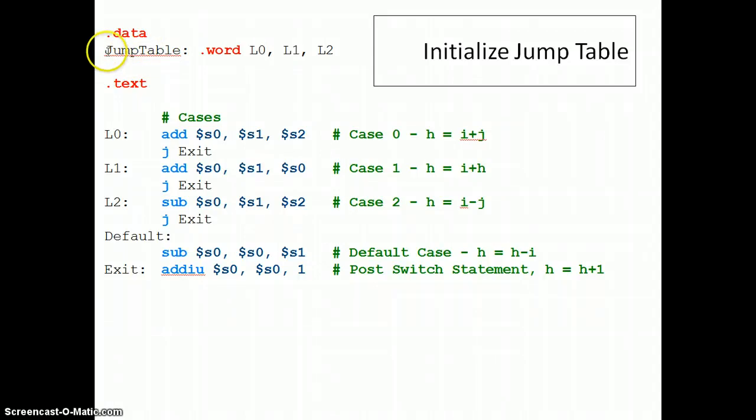The jump table, I just give it a label. So this could be anything, any English word, colon, .word. This is saying I want whatever this variable is called to be an array of words and I want to initialize it with three words corresponding to L0, L1, and L2. So when the assembler compiles this, it goes and finds out what the addresses for L0, L1, and L2 are and replaces those in the three locations of memory that jump table reserves.